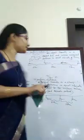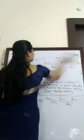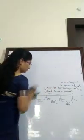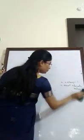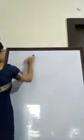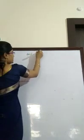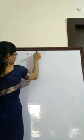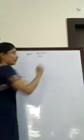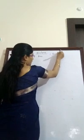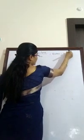Today we discuss some numericals based on speed. The speed formula is: speed is equal to distance divided by time. Another formula: distance is equal to speed multiplied by time.